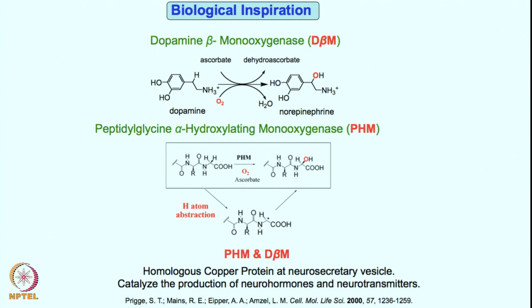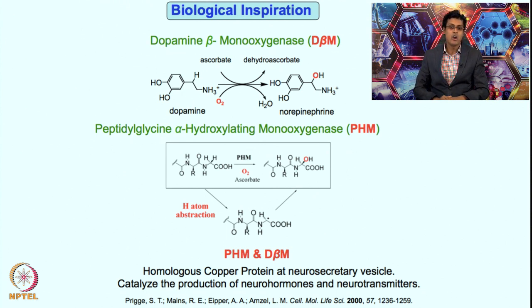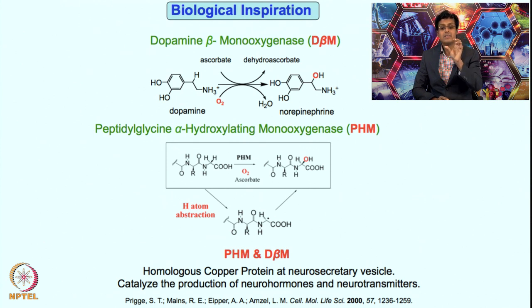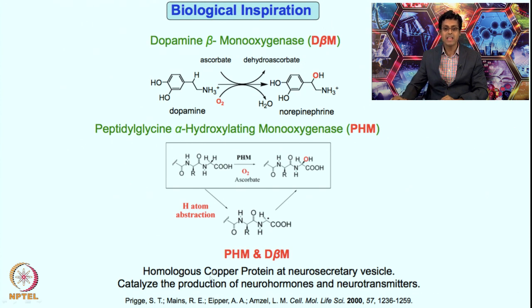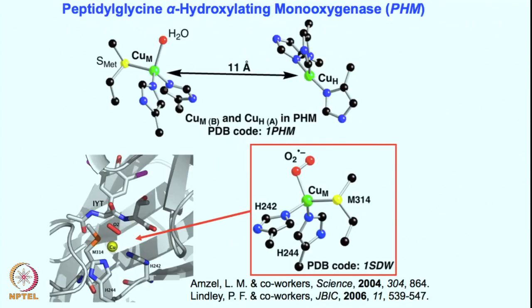The substrate is hydroxylated by a copper-oxygen species, but these copper-oxygen species are not the binuclear ones — this is the mononuclear one. Quite interestingly, if you look at the active site there are two copper centers, yet only one copper center is doing the chemistry. They both catalyze the production of neurohormones and neurotransmitters, which are quite extensively studied and quite important.